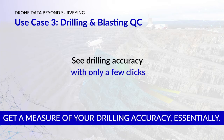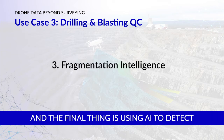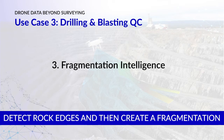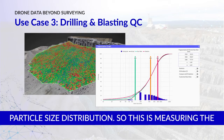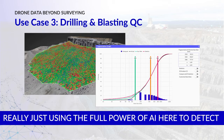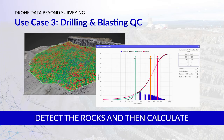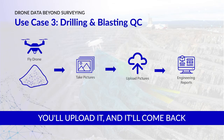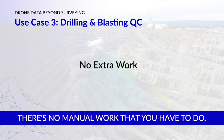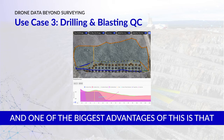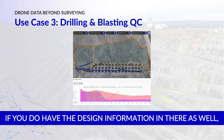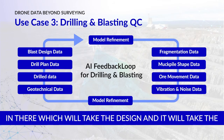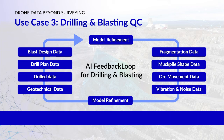The final thing is using AI to detect rock edges and create a fragmentation particle size distribution. This measures the outcomes of your blasting using the full power of AI to detect the rocks and calculate the particle size distribution. You just fly the drone over the muck pile, upload it, and it comes back with all of the rocks already detected — there's no manual work required. If you also have the design information in there, there's additional AI which takes the design and the measured fragmentation outcomes and starts to learn how your design parameters impact the fragmentation output.